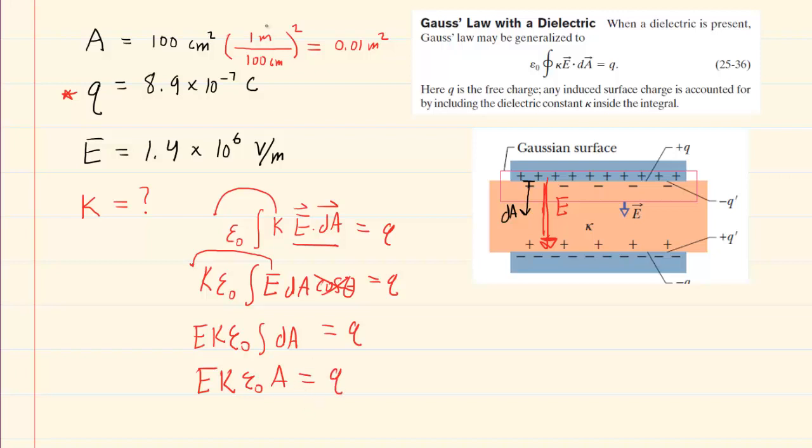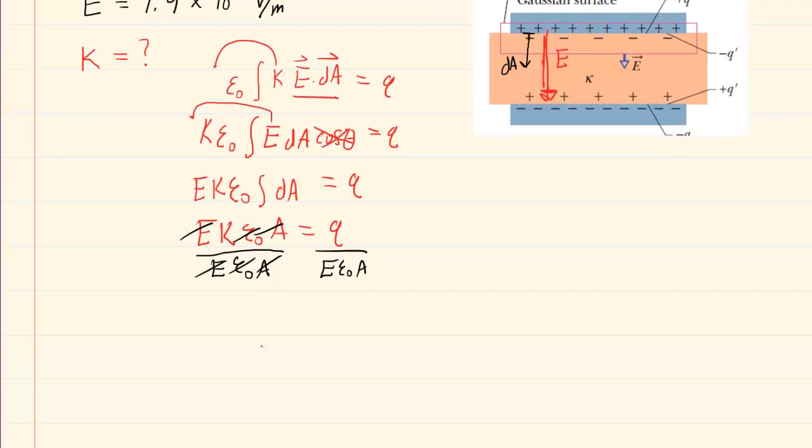So our final expression will be E times kappa times epsilon naught times area is equal to the free charge, Q. Now we're trying to solve for kappa, so it's going to be useful to divide both sides of this equation by the quantity E epsilon naught A. When we do that, the electric field, epsilon, and area cancel on the left-hand side. So now we have our dielectric constant, kappa, equal to the free charge divided by electric field times epsilon naught times area.